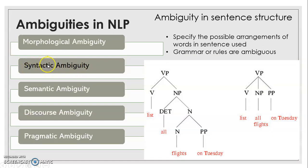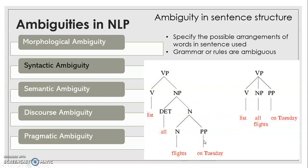The next ambiguity is syntactic ambiguity, which is an ambiguity present in the sentence structure. Syntax specifies the possible arrangements of words in a sentence. If words are not arranged in a proper order, the sentence is not grammatically correct, and grammar rules help identify this. If the grammar rules themselves are ambiguous, then for a particular sentence more than one parse tree can be correct, leading to ambiguity in the sentence structure. Different structures lead to different interpretations.